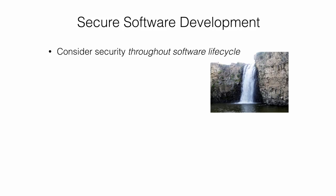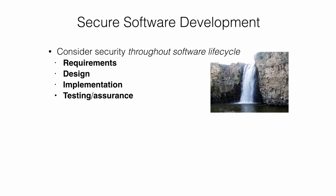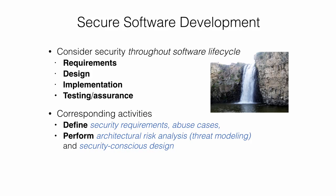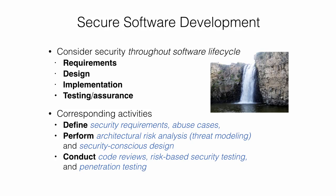The course then steps back to look at the software development process generally, examining different phases of software development life cycles — requirements, design, implementation, and testing and assurance — and corresponding security-focused activities. These include defining security requirements and abuse cases, performing architectural risk analysis and threat modeling, using security-conscious design, conducting code reviews, performing risk-based security testing, and penetration testing to ensure the software truly is secure.